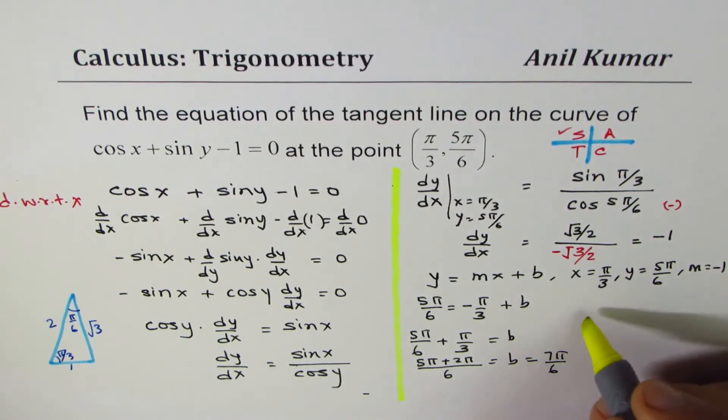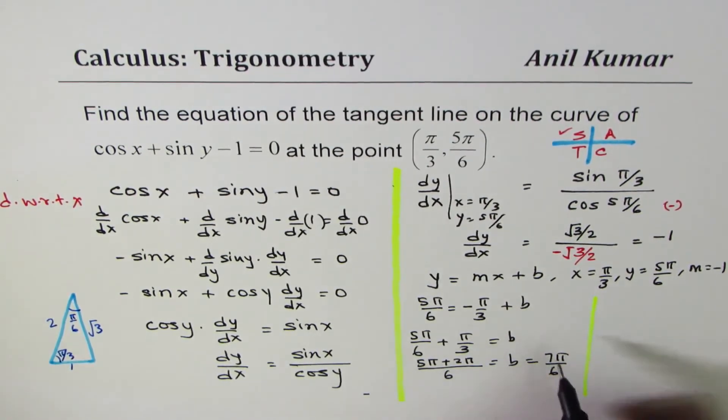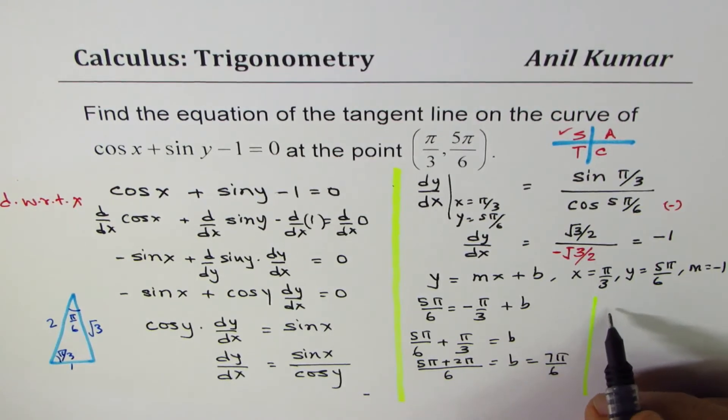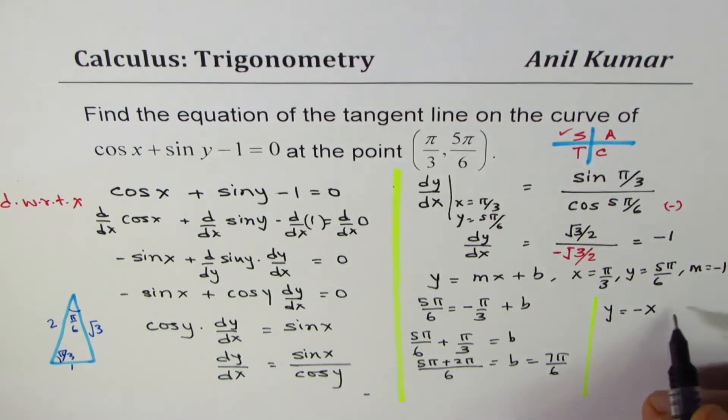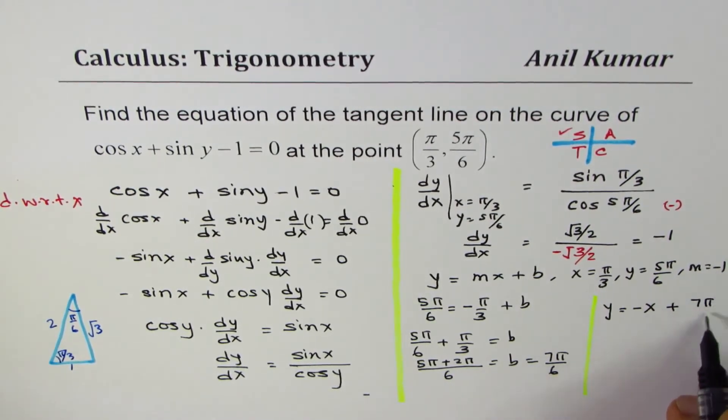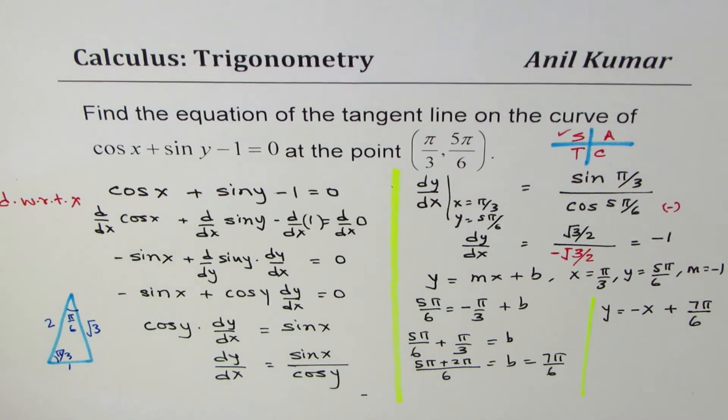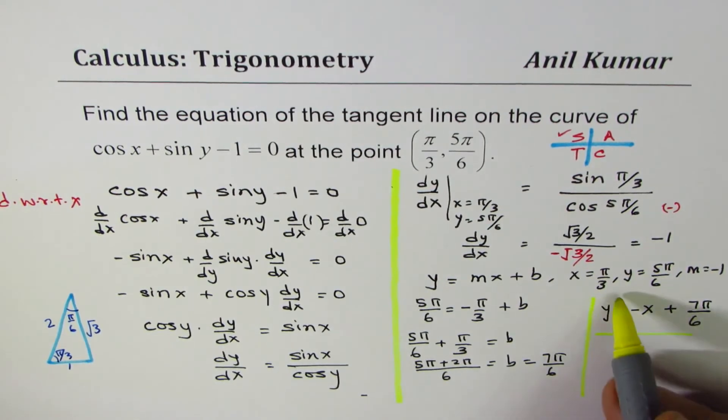Once we know the value of b, we already know what the slope is, we can write down the equation of the tangent line as y = -x + 7π/6. So that becomes the equation of the tangent line at the given point for this equation. That is our answer.